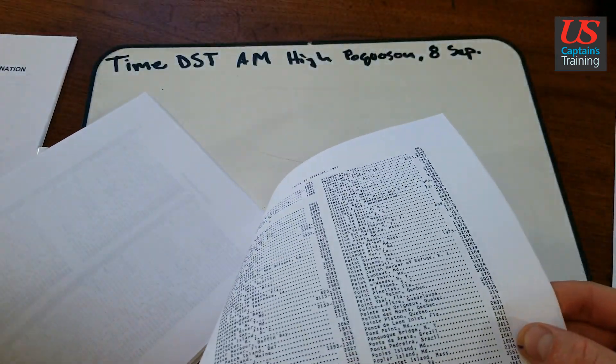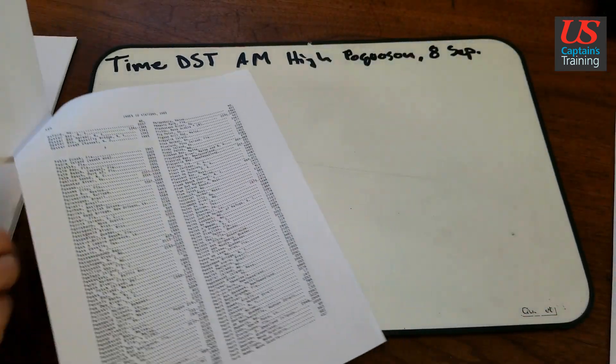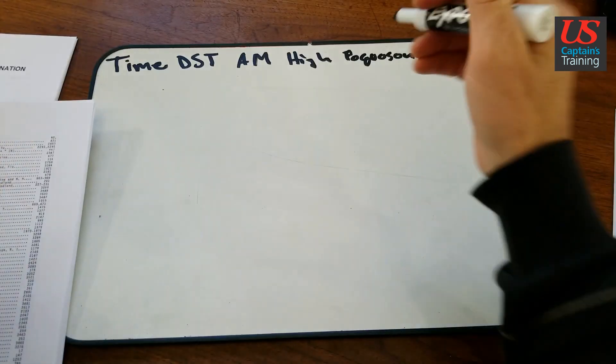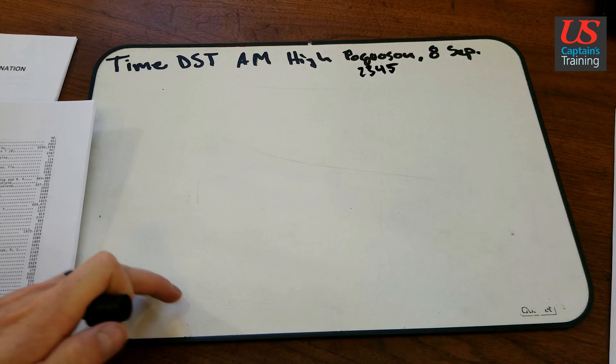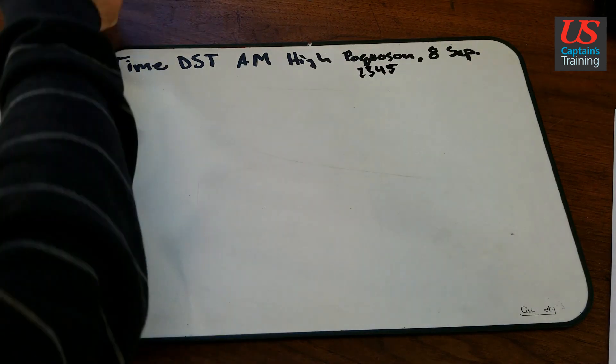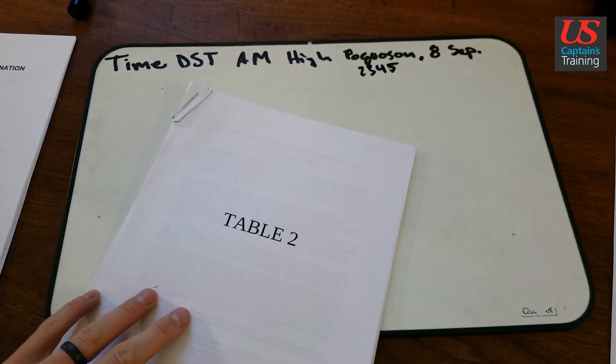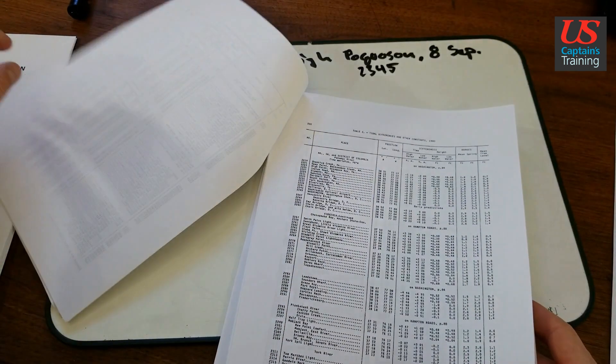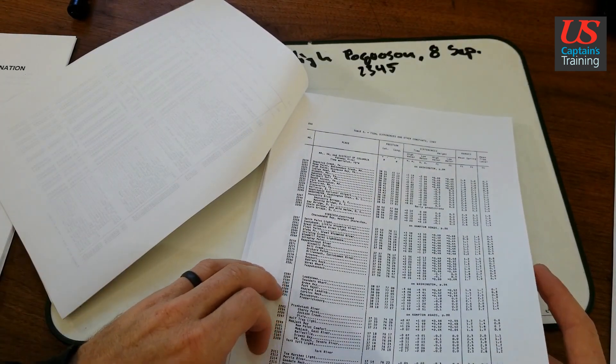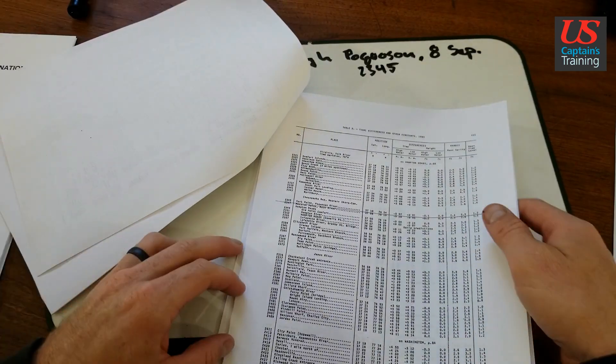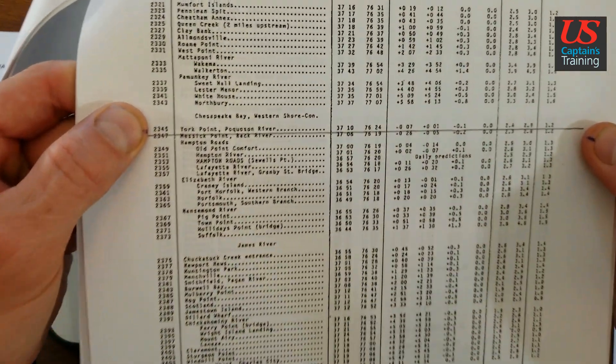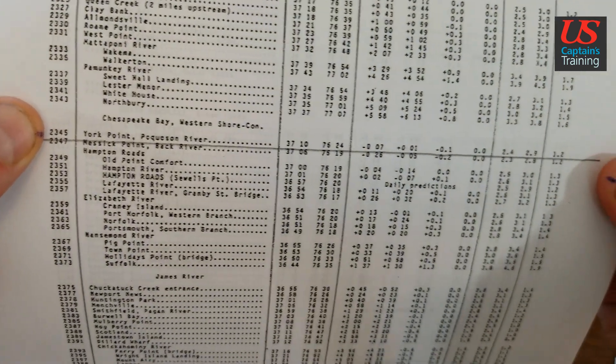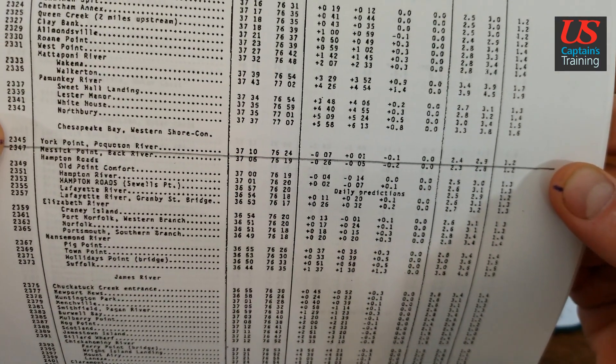So now we find 2345. And I like to record it. 2345 is the number. So let's find it in table 2. So 2345, and column one is what we're looking for. 2319. And I have it underlined right here. See 2345, Pocosin River.